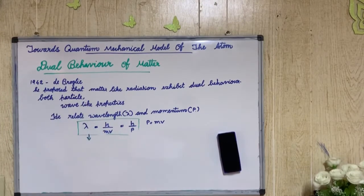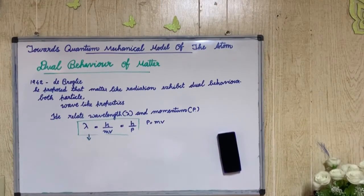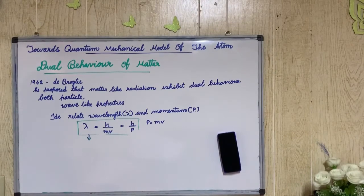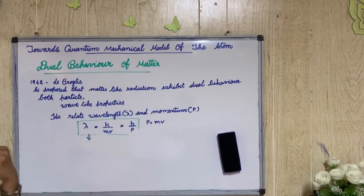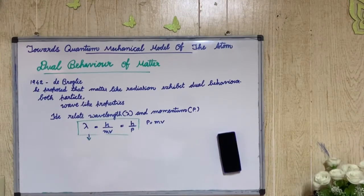First, we will talk about Dual Behavior of Matter and the de Broglie Equation. We will discuss Electromagnetic Radiation and its dual nature — both Particle Nature and Wave Nature. In 1924, French physicist de Broglie proposed that, like electromagnetic radiation, matter also has dual nature and dual character.